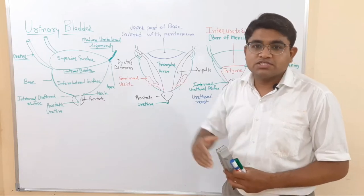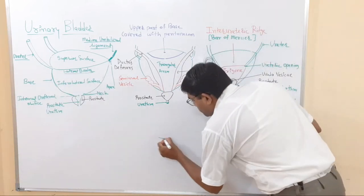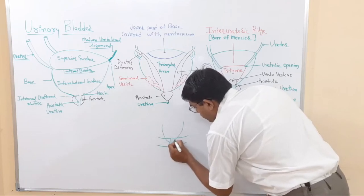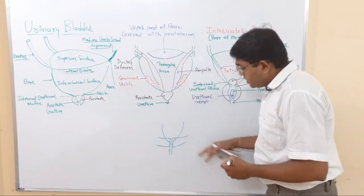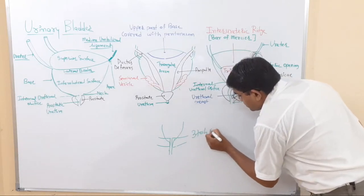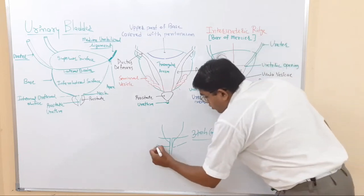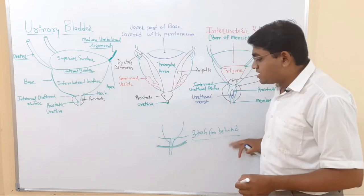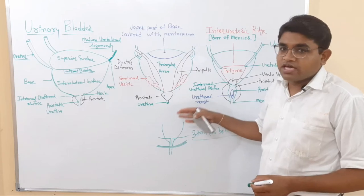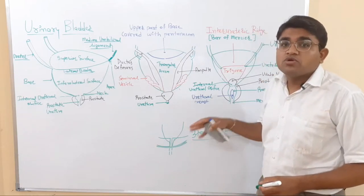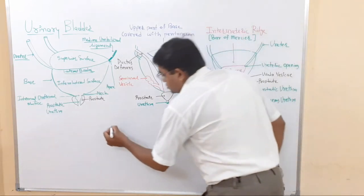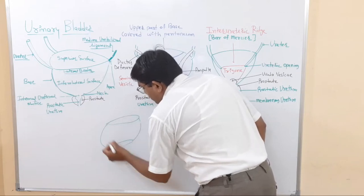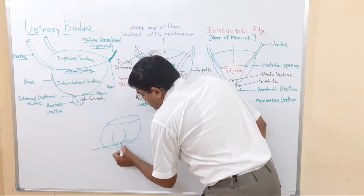The neck of the urinary bladder lies behind the pubic symphysis — about three to four centimeters behind the lower border of the pubic symphysis. It also lies just superior to the plane of the pelvic outlet.